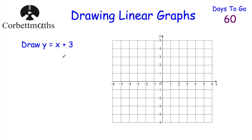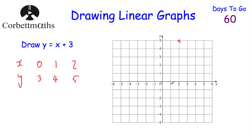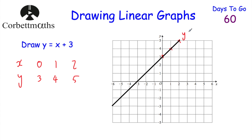Next: draw y equals x plus 3. Feel free to pause and draw this graph. Using an xy table with x = 0, 1, 2 — add 3 to each: 0+3=3, 1+3=4, 2+3=5. Coordinates: (0,3), (1,4), (2,5). Plot those points, get a ruler and pencil, draw a nice straight line through them. That graph has equation y equals x plus 3. Well done if you got that.